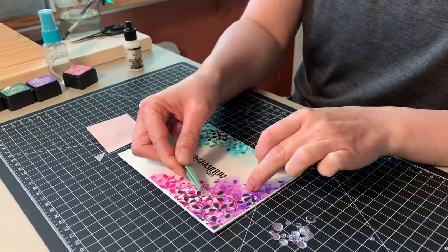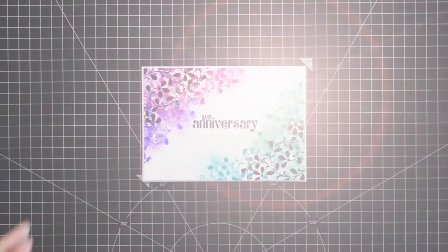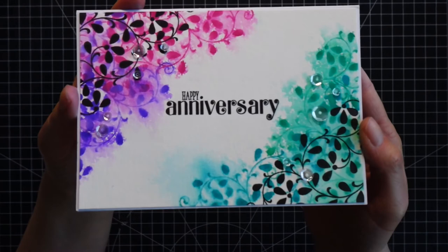The sequins is from Neat and Tangled, and the glue I'm using here is the Multimedium Matte Adhesive from Ranger. I adhered the sequins randomly. I did not have any specific pattern. This finishes the card. I really like the look after the water mix with the Distress Inks, and I hope you will give it a try.